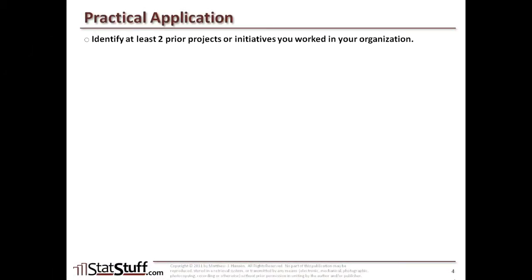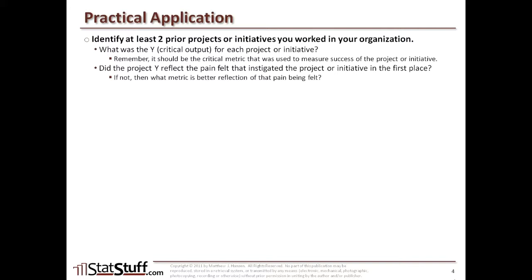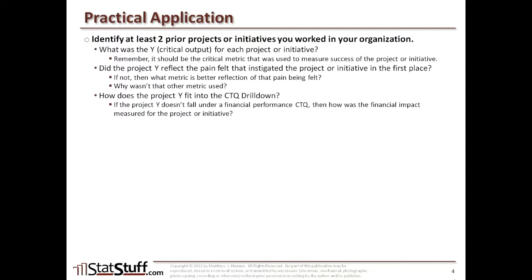Before we close this lesson, let's discuss how to apply these concepts practically. Identify at least two different projects you worked on in the past. Ask yourself: what was the project Y — that critical output metric used to measure success? Did the project Y reflect the actual pain being felt in the business that instigated the project? If not, what would be a better metric, and why wasn't it used? Also ask how that project Y fits into the overall CTQ drill down, and if it doesn't fall under the financial performance CTQ, how was financial impact measured for that project?